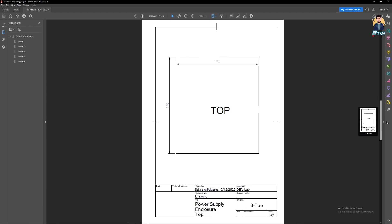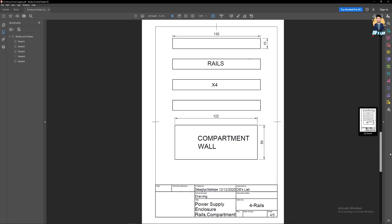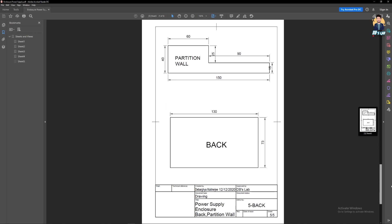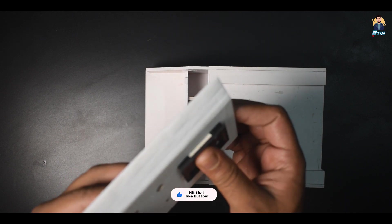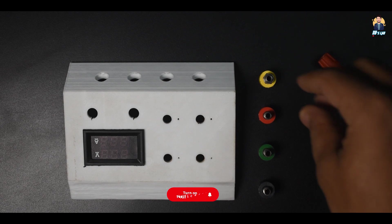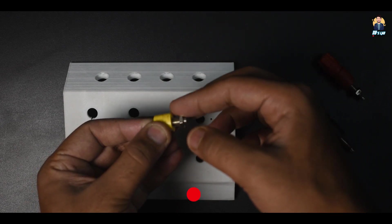I've made this PDF file with all the templates so you can print it out and make the necessary cuts. Step 3: Front Panel Connectors. The display is just push-in. So now I'll install the banana sockets.